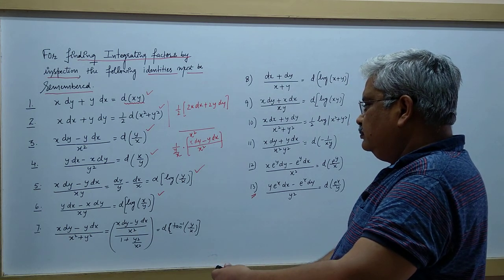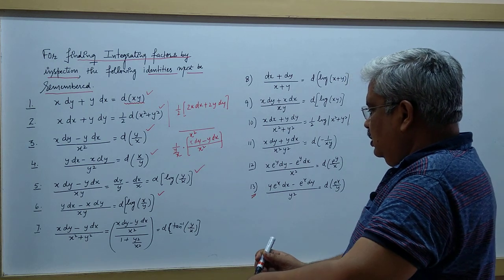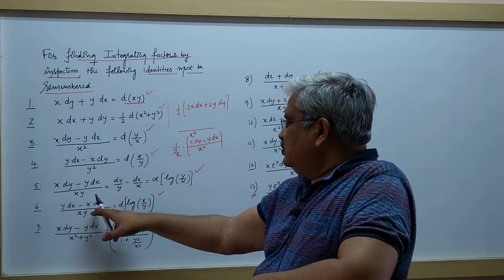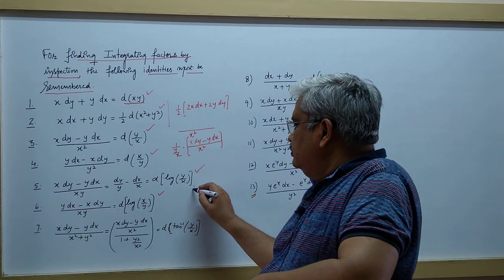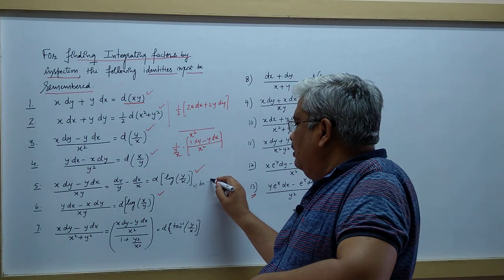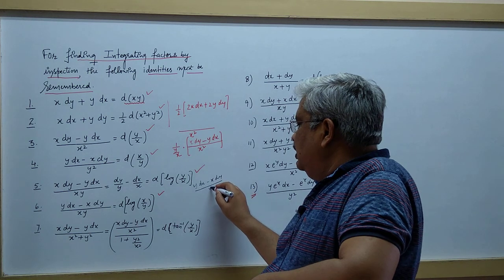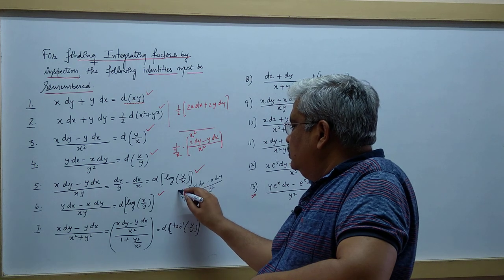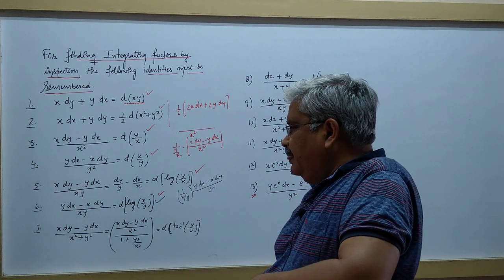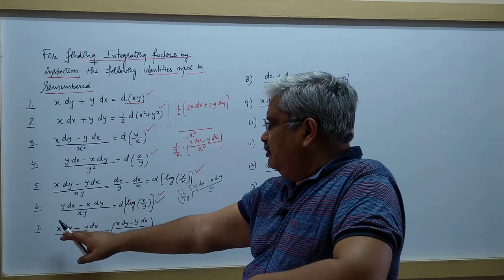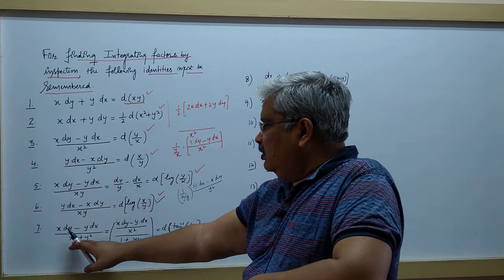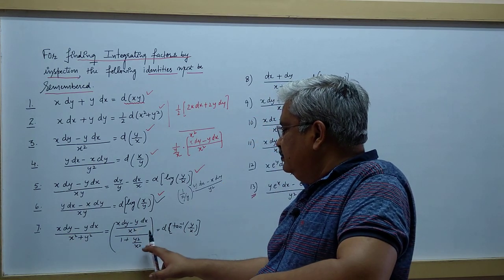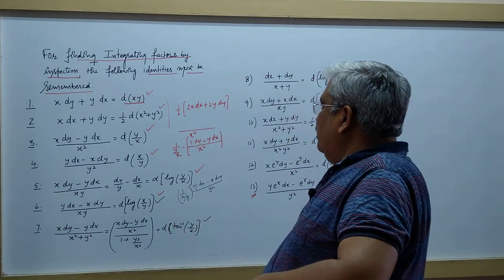The same identity with x·dy - y·dx, but now divided by x² + y², if I multiply and divide by x², the result becomes tan⁻¹(y/x). Similarly, dx plus dy with logarithm: x·dy + y·dx = d(xy) gives log terms.